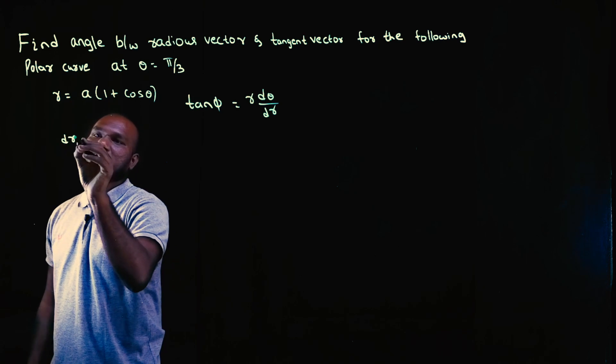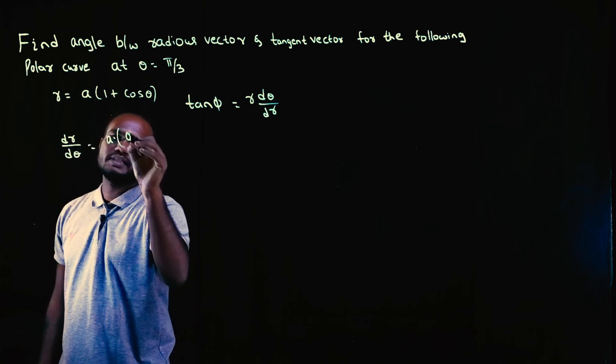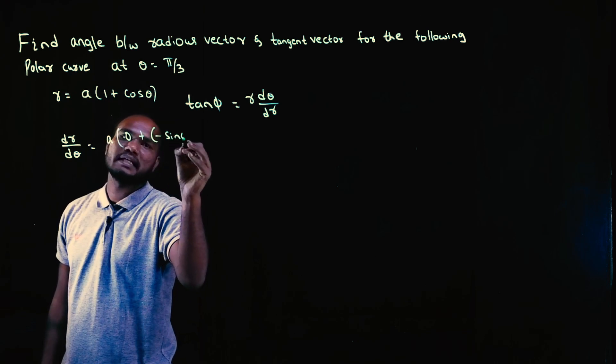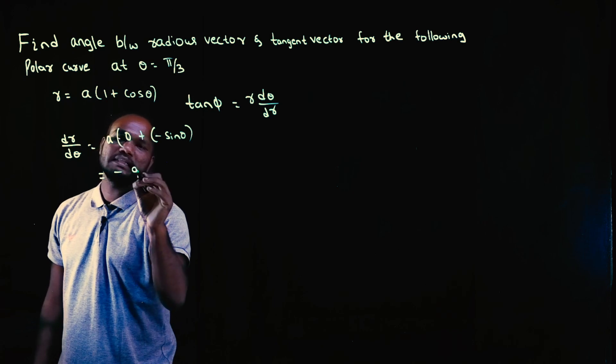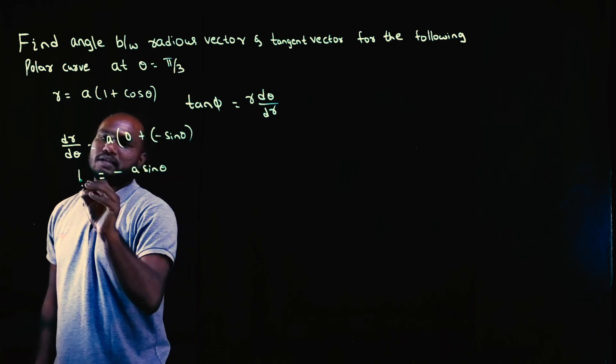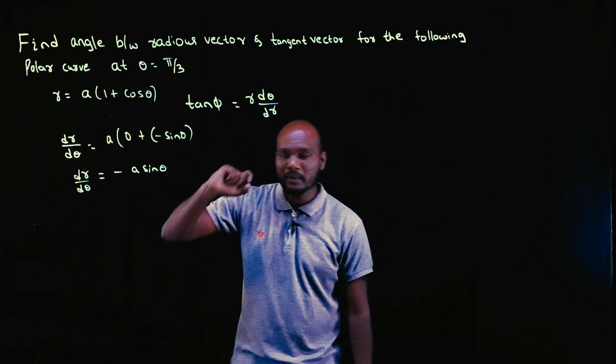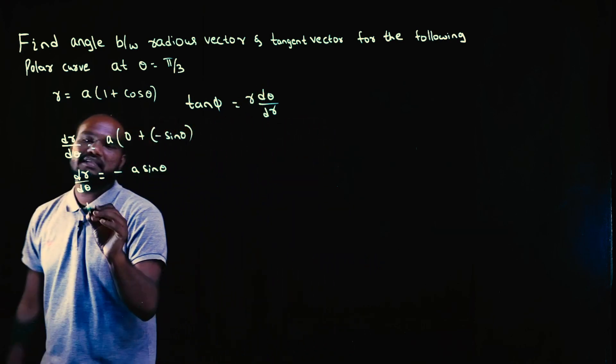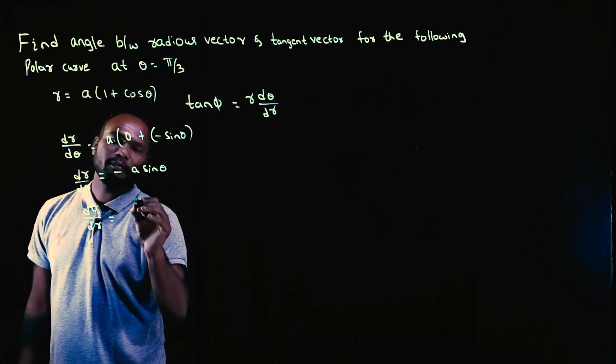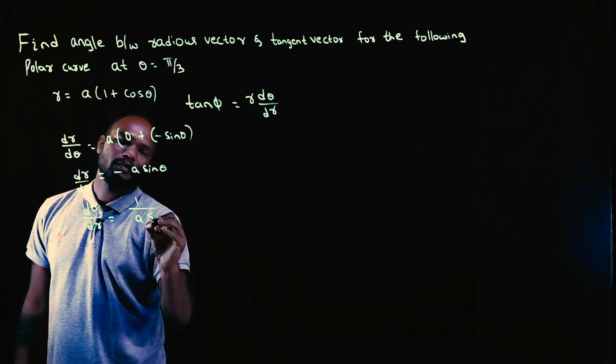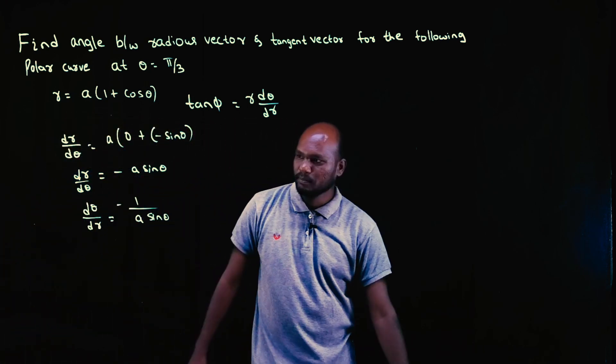So dr by d theta equals, A is a number, one differentiation is zero, plus cosine differentiation is minus sine theta. So a plus into minus is minus a sine theta. Do I need dr by d theta or d theta by dr? I need d theta by dr. So reversing this gives one by minus a sine theta.